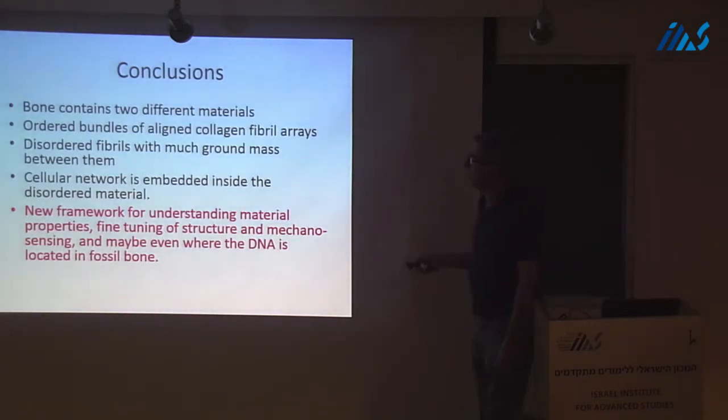Now, I know in the literature there's a term woven bone, and that's a catch-all for, I don't know what the hell's going on, we call it woven bone. And so there's been a lot of not-so-serious debate that compares this type of woven bone to that and to that. And I think my guess would be that maybe we're dealing here with a bone which, for whatever reason, has a huge proportion of this disordered material. So in conclusion, bone contains two different materials, the ordered bundles of aligned collagen fibril arrays, the disordered fibrils with much ground mass between them, the cellular network is embedded inside the disordered material, and this provides us now with a new framework for understanding or thinking about material properties, fine-tuning of structure, mechanosensing, and maybe even where the DNA is located in fossil bone. Thank you.